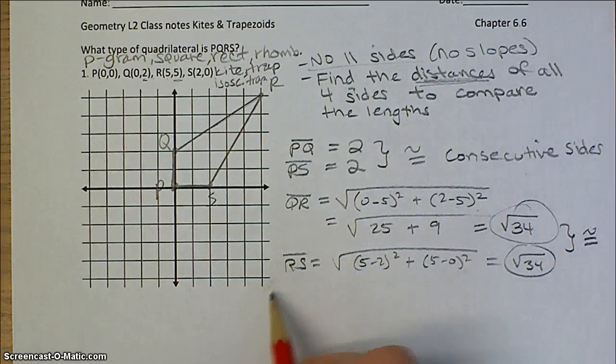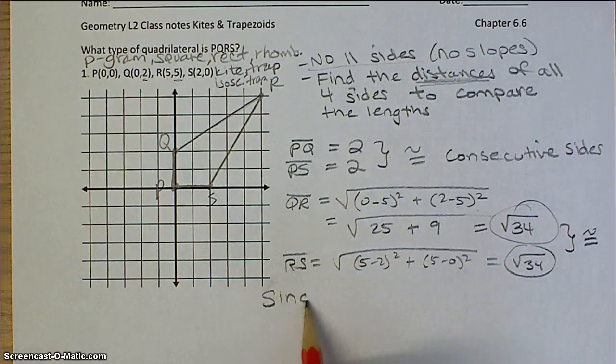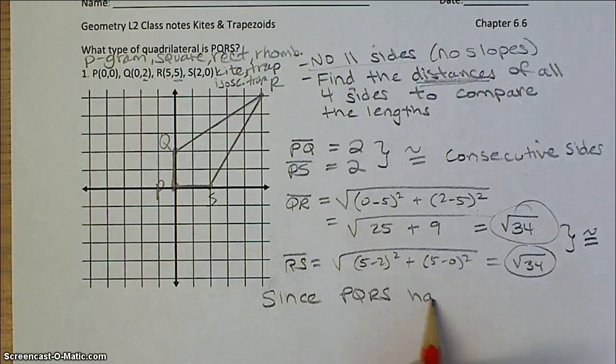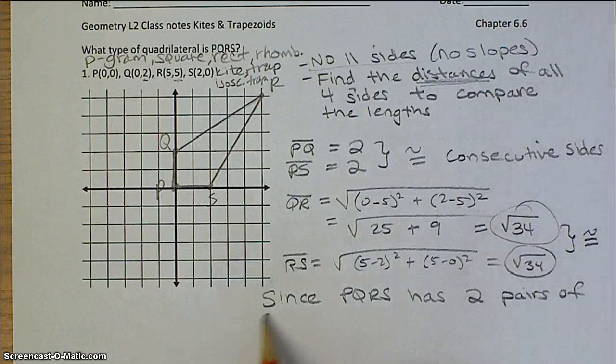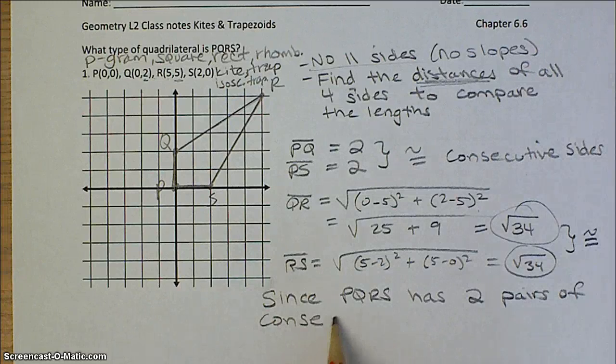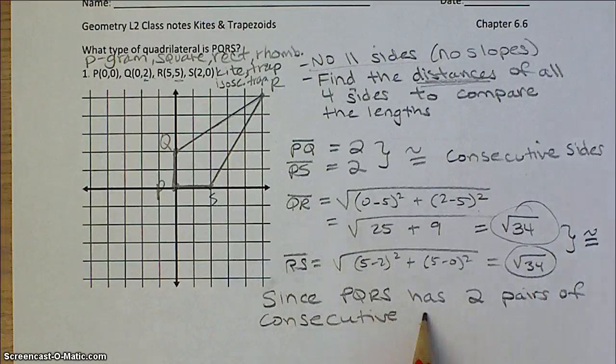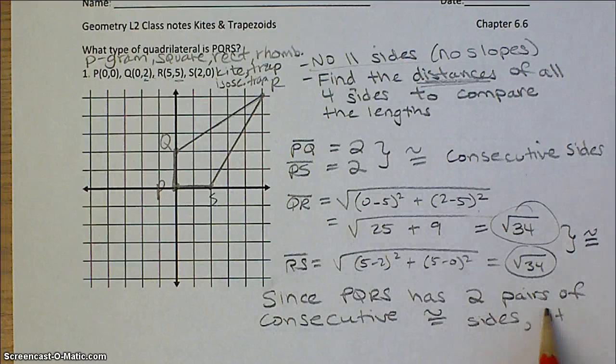So then remember, you're always going to write a sentence. Since PQRS has two pairs of consecutive congruent sides, it is a kite.